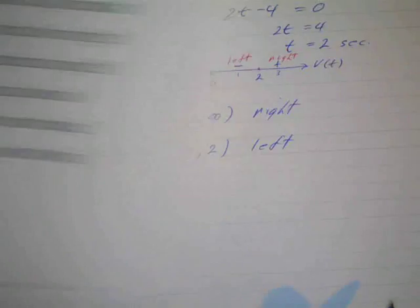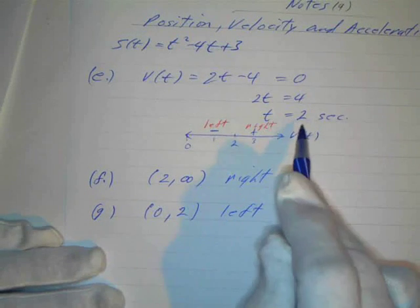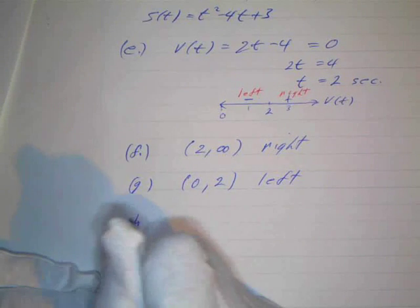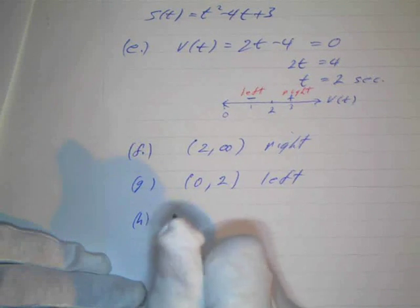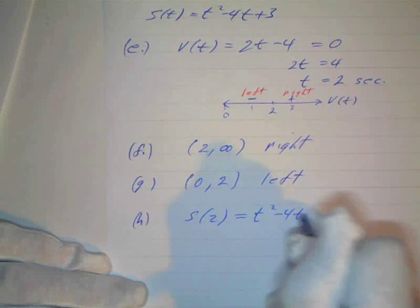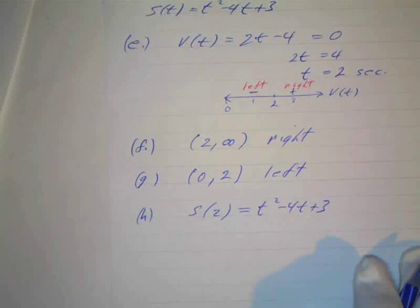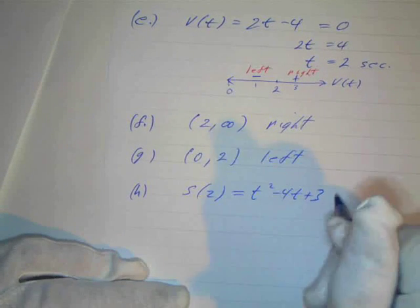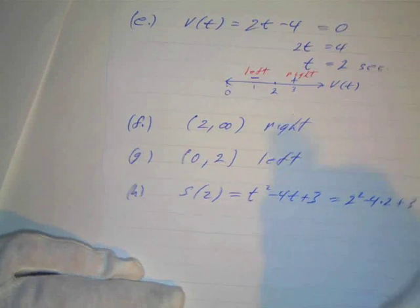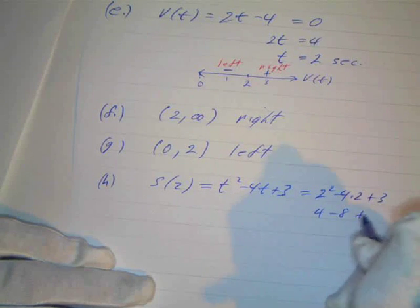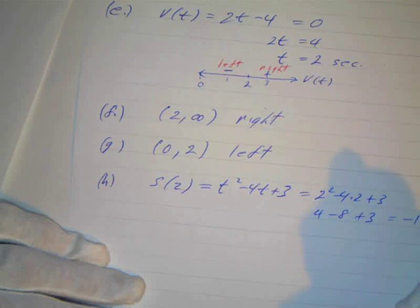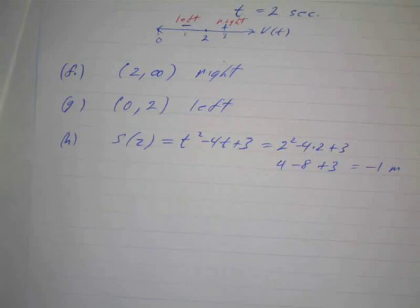Letter H: where is the particle when it changes directions? If I know the when, I can find the where using the position function. We already know the when is t equals 2, so we just compute s of 2. That's 2 squared minus 4 times 2 plus 3, which is 4 minus 8 plus 3, equal to negative 1. So the particle is at negative 1 meters when it changes direction.